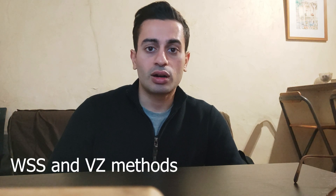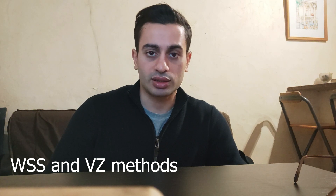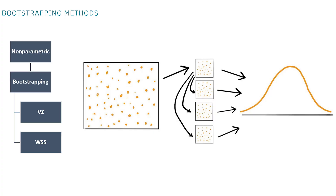But there is not only one type of bootstrapping method — there are different ones, especially for intermittent demand. The most famous ones are WSS and VZ methods. And in this diagram, you can see how the bootstrapping is done by resampling from the sample and creating different samples and then eventually creating a distribution.